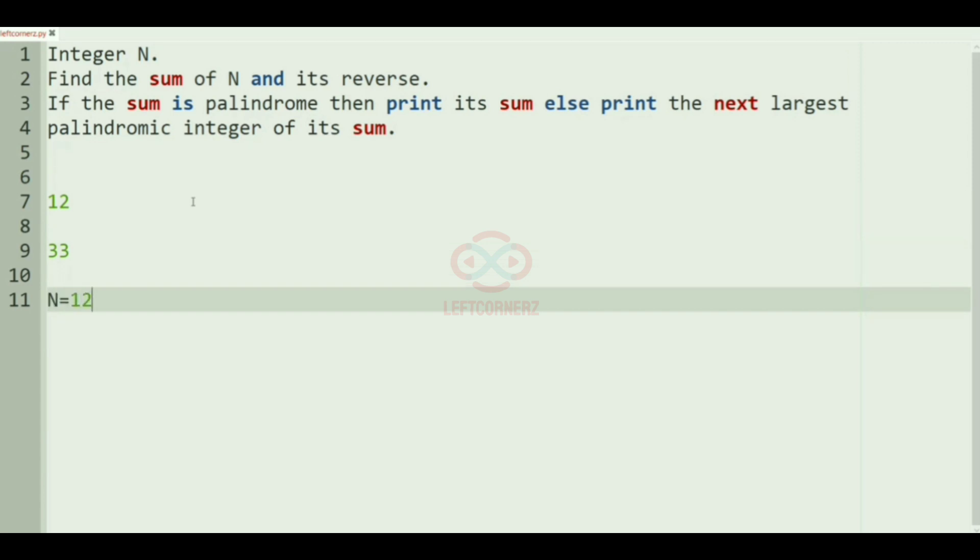Here the integer N is 12, the reverse of integer N is 21, and the sum of N plus reverse is equal to 33. 33 is a palindrome, so we'll print 33 as our output. Now we'll take our another test case.